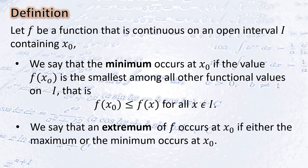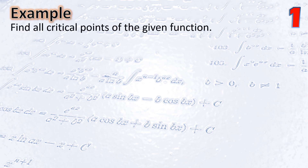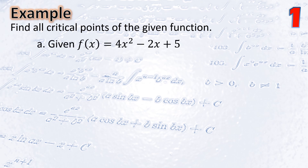We say that an extremum — that is, the absolute minimum value or absolute maximum value of the function — occurs at x₀ if either the maximum or the minimum occurs at x₀. Let us have some examples. Find all critical points of the given function: f(x) = 4x² − 2x + 5.